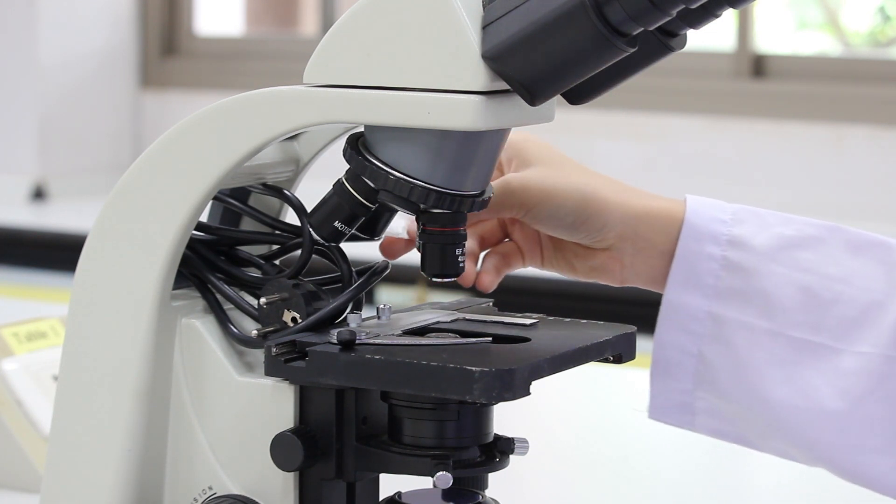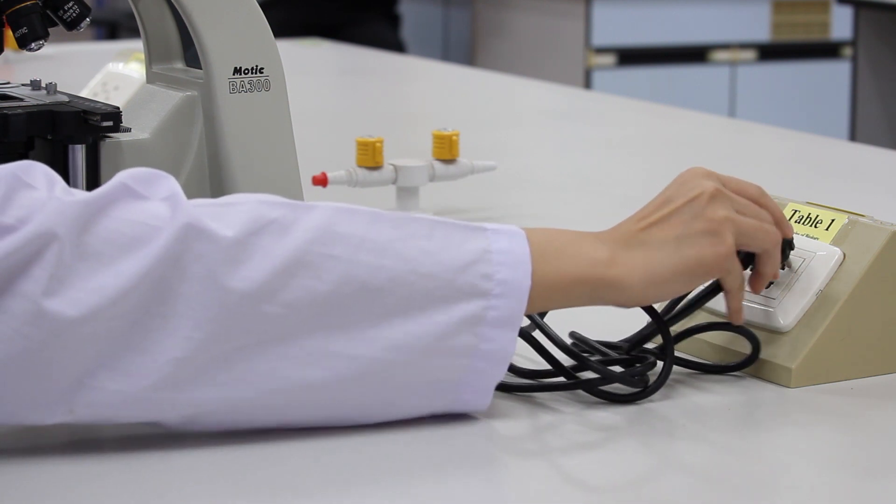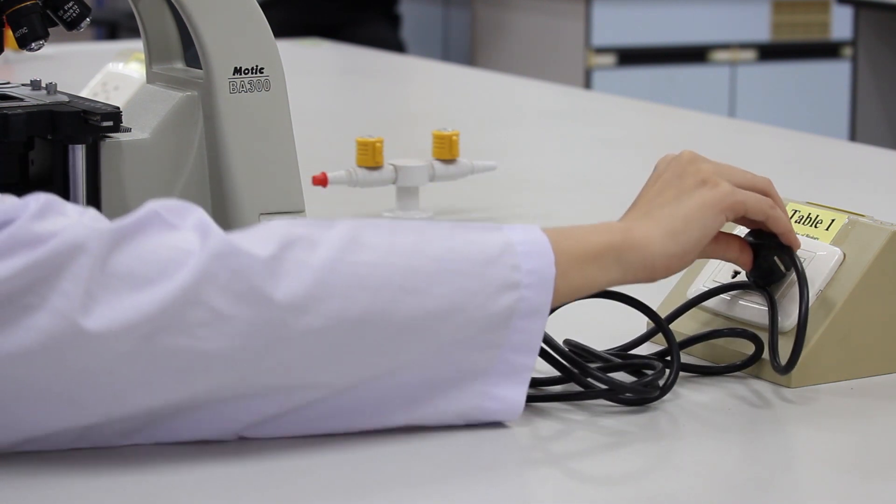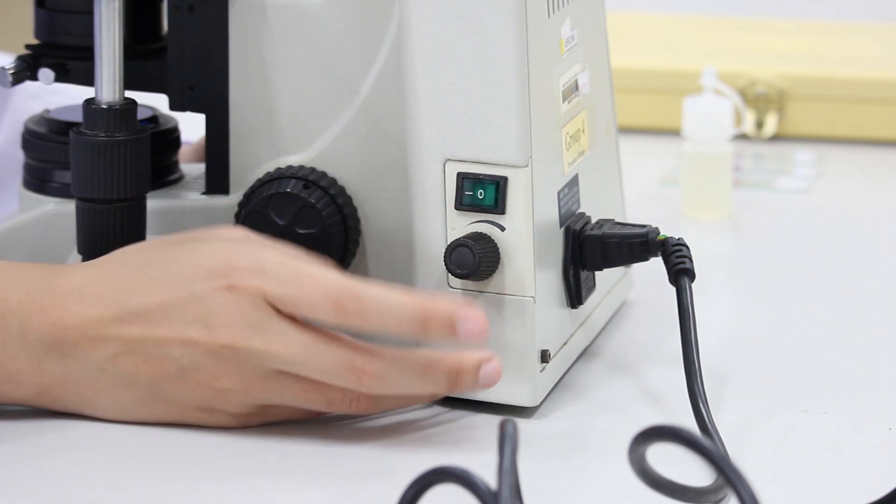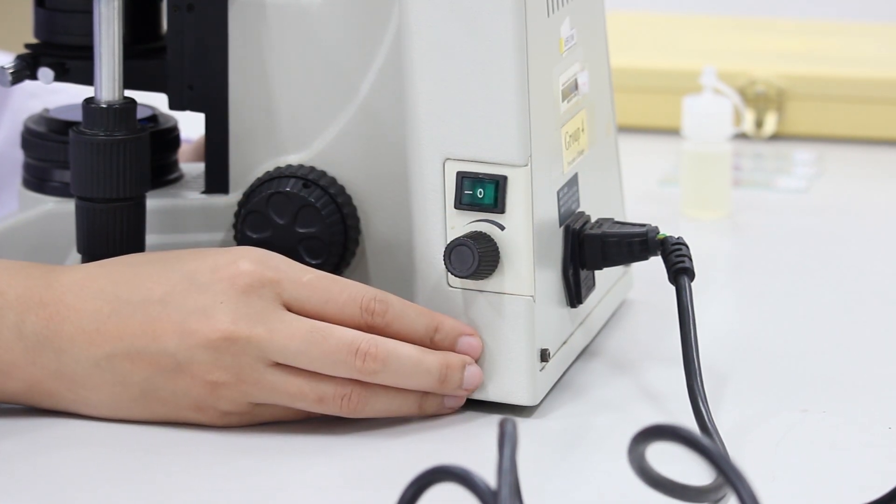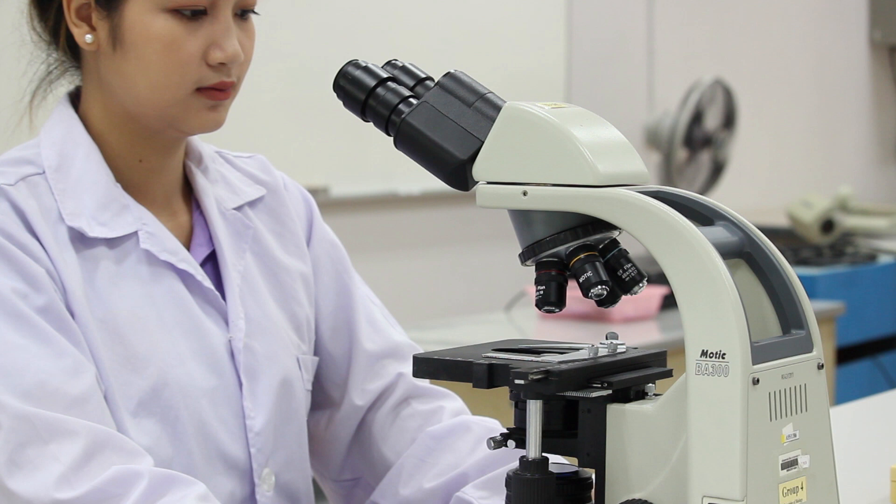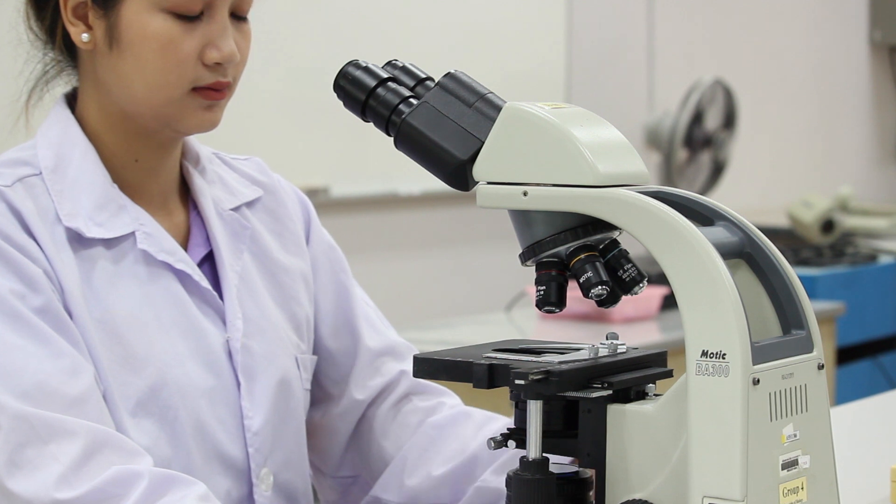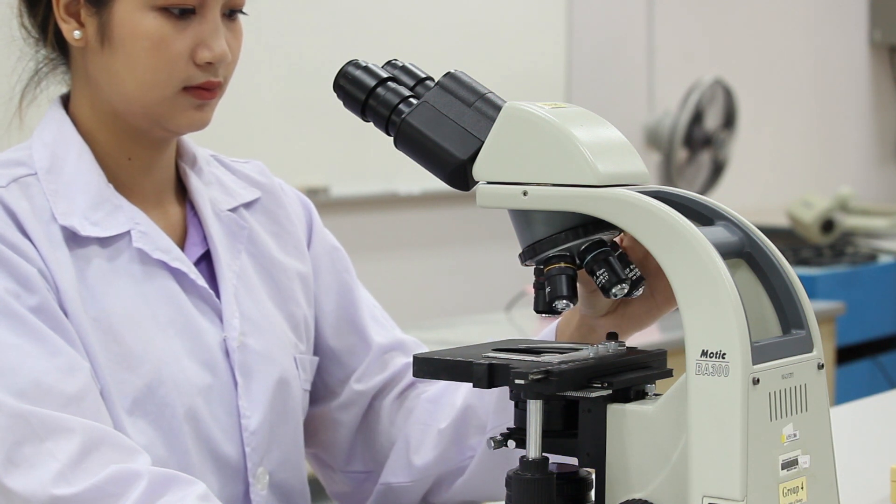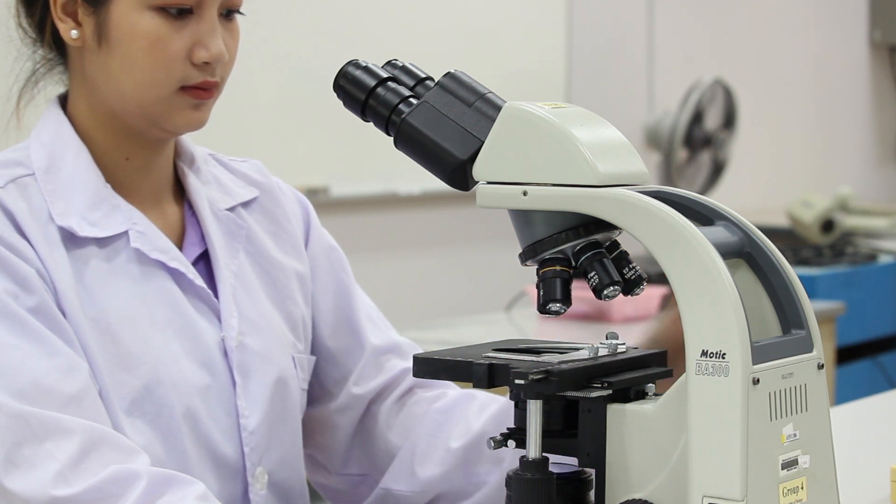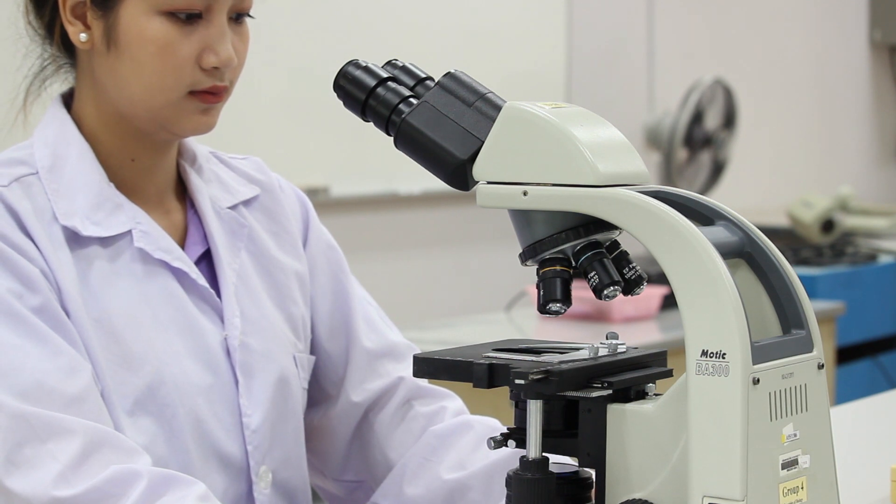Next, plug in the microscope and turn on the light source and increase the light intensity. If it is not already in position, rotate the nose piece until the lowest power 4x objective is aligned with the body tube.